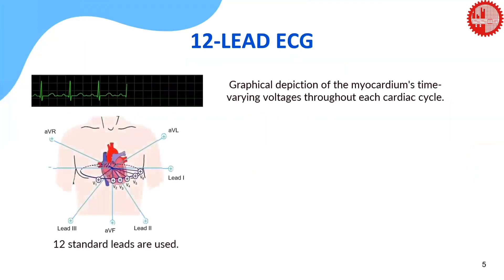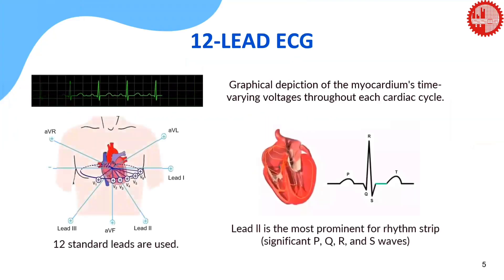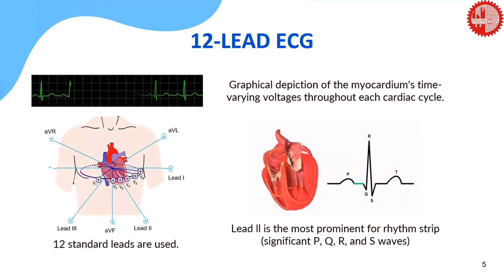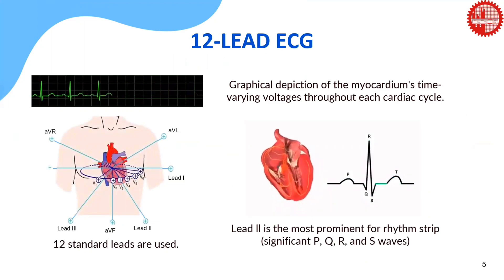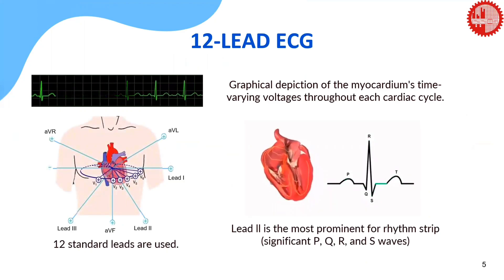ECG refers to the graphical depiction of the time-varying voltage of a cardiac cycle. In standard ECG, 12 leads are used. Among them, lead 2 is most prominent.